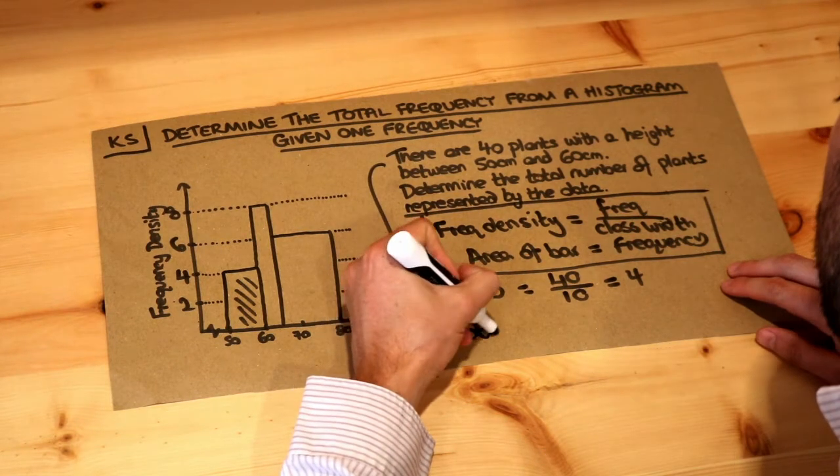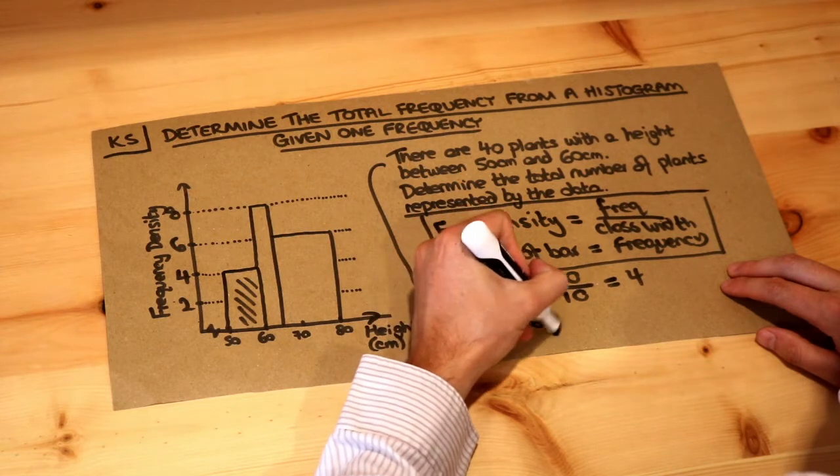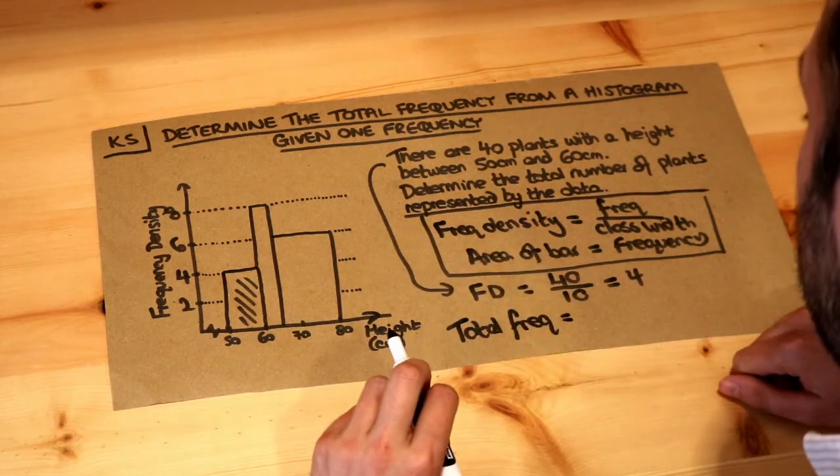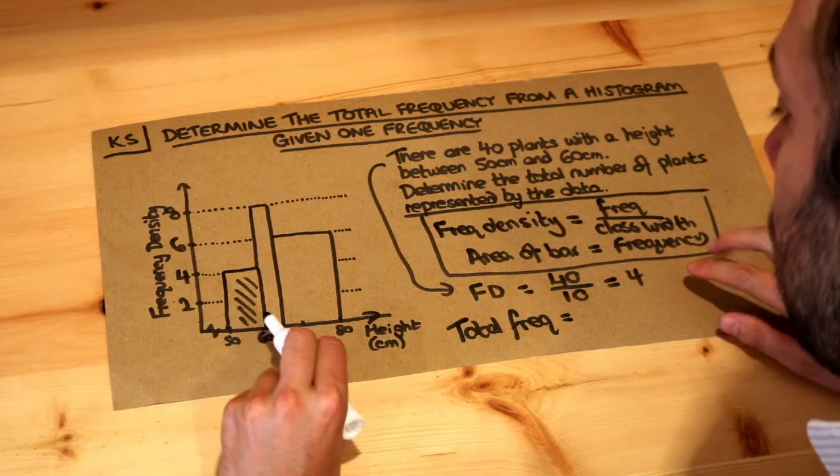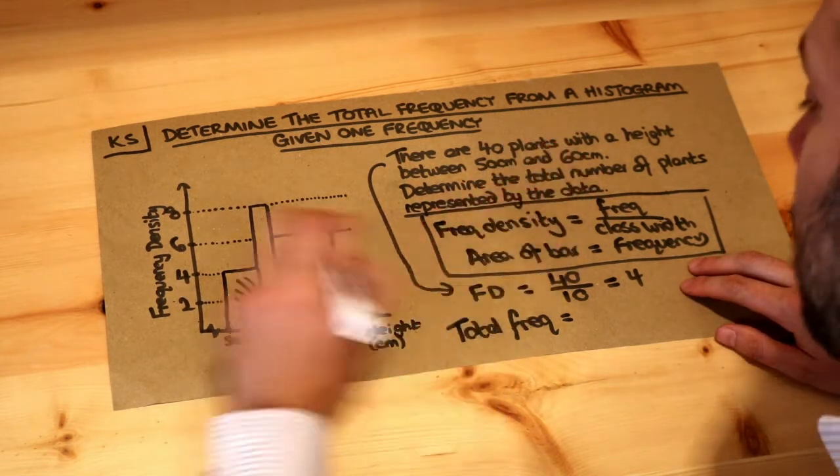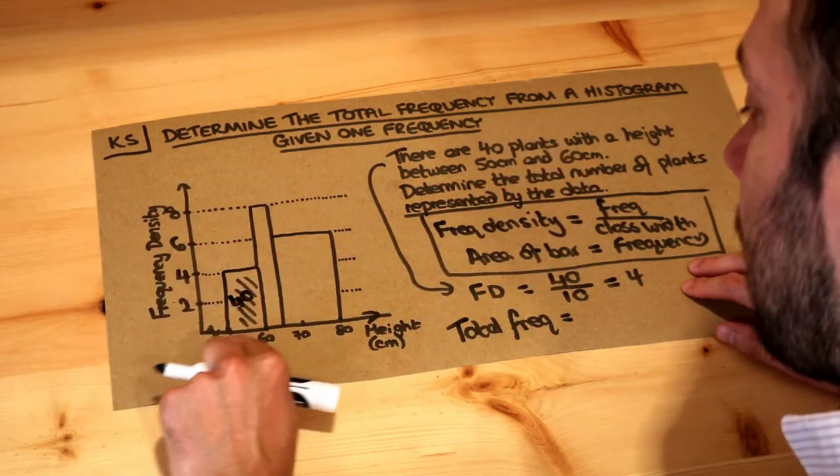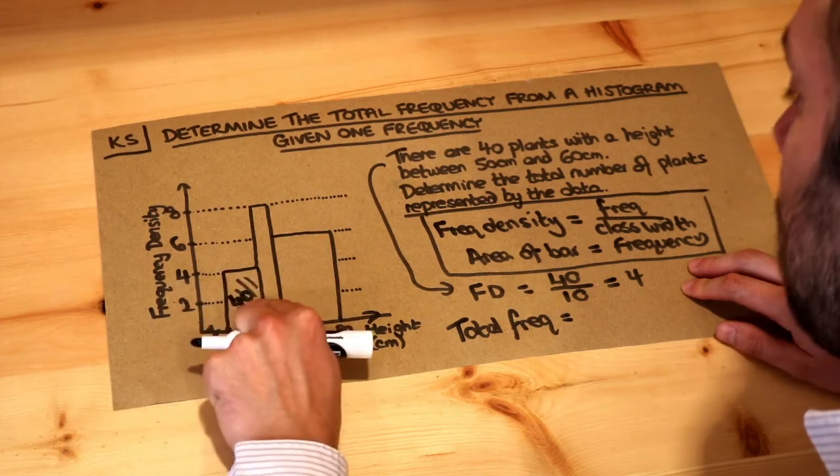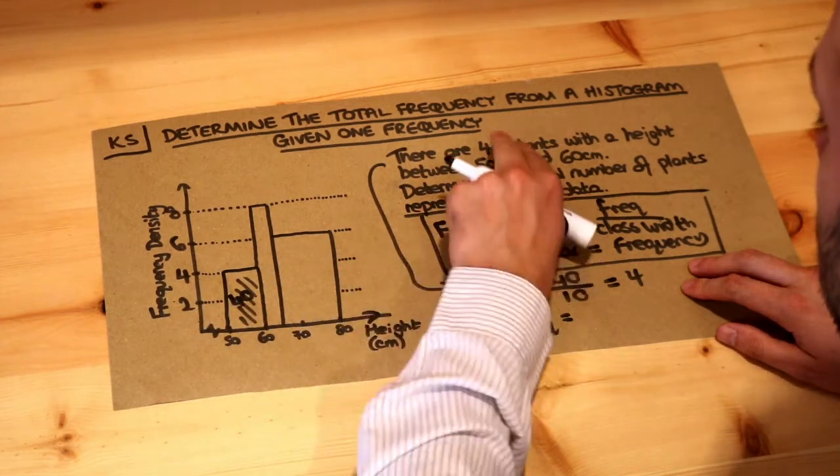So the total frequency, the total area, let's just work out the area of each bar. We already know that the area of this bar is 40 plants, because look, that's a width of 10 times 4 is 40 plants. We already knew that from earlier.